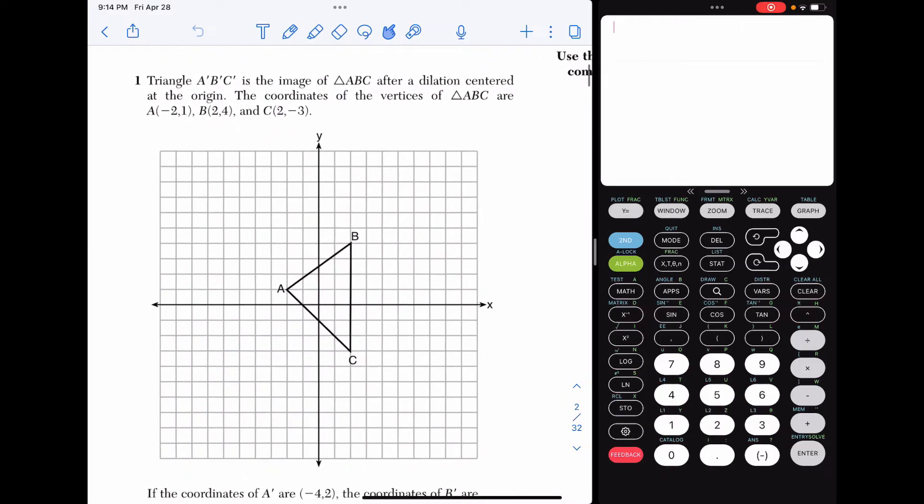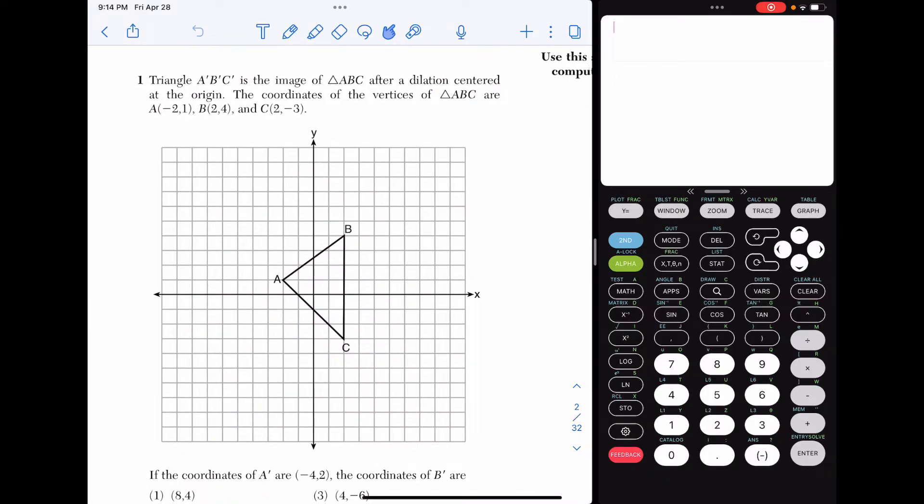Alright, first up, number one. Triangle A prime B prime C prime is the image of triangle ABC after a dilation centered at the origin, and it gives us the coordinates of triangle ABC. If the coordinates of A prime are negative 4, 2, we're asked to find the coordinates of B prime.